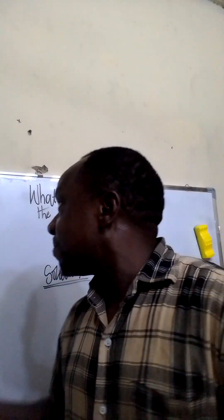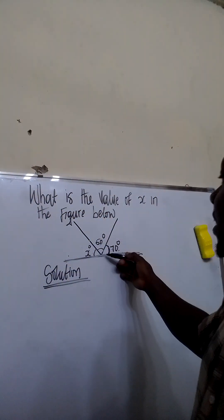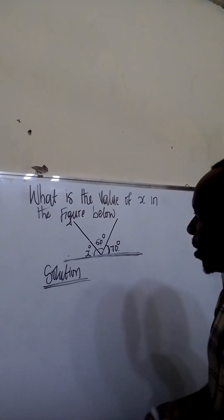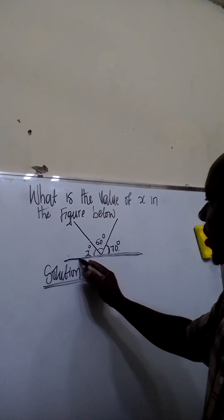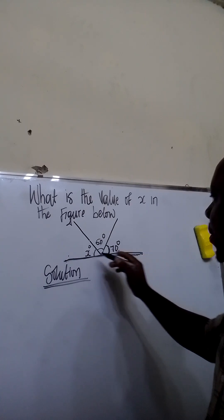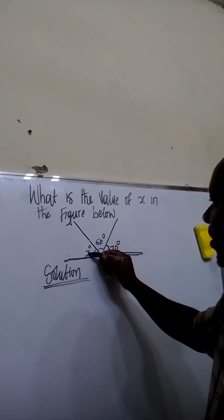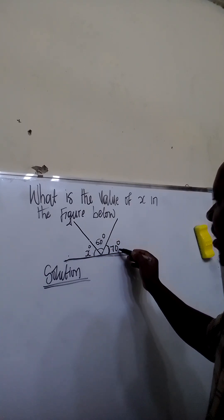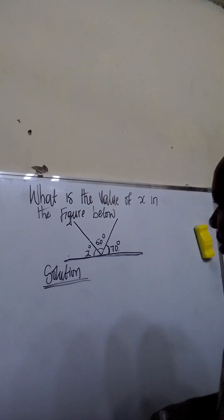Hello, today we are asked to find the value of X in the figure below. Looking at this figure carefully, it consists of a straight line with three angles: X degree, 60 degrees, and 70 degrees.